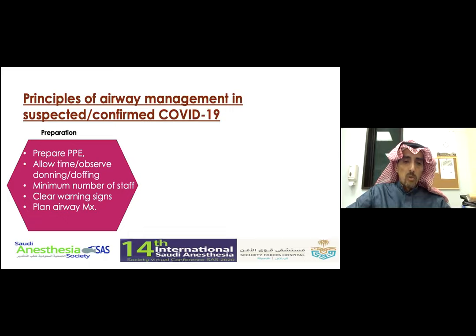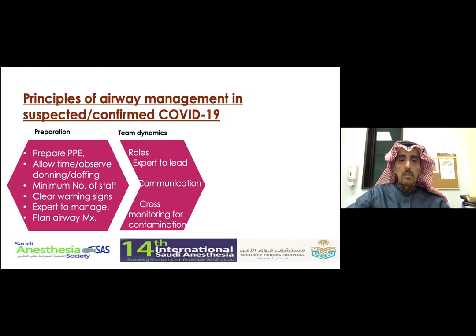The guidelines emphasized active observation with someone watching a colleague during donning and doffing to maximize safety. They also covered the minimum number of staff, clear warning signs, and a proper detailed plan for airway management — particularly when a difficult airway is anticipated or intubation is in a remote area. Planning for required devices in advance is better than rushing to intubate and encountering difficulties. The guidelines also emphasized team dynamics, assigning roles, and getting the most expert clinician to lead.